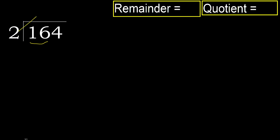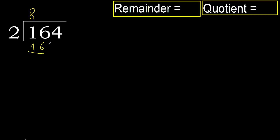2 multiplied by which number is nearest to 16 but not greater? 2 multiplied by 9 is 18 — 18 is greater. So try 2 multiplied by 8, which is 16 — 16 is not greater, so 8 works.